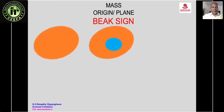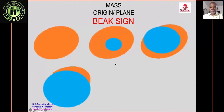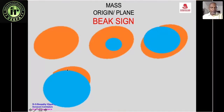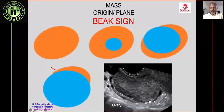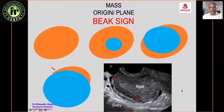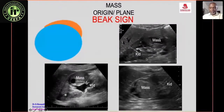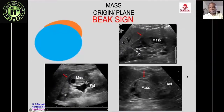The beak sign: when a mass arises from an organ and enlarges significantly, the remaining organ tissue gets compressed and forms a beak over the mass. If the beak sign is present, the mass is confirmed to arise from that organ. An example shows a large echo-poor mass with compressed ovary forming a beak on either side. Multiple renal masses also demonstrate the beak sign, confirming renal origin.